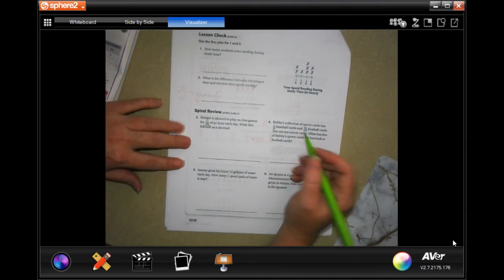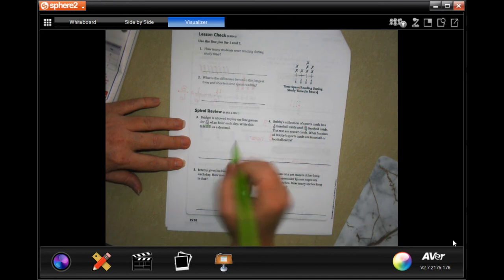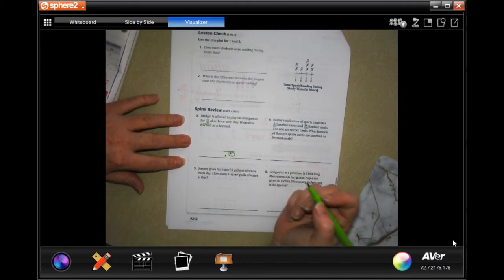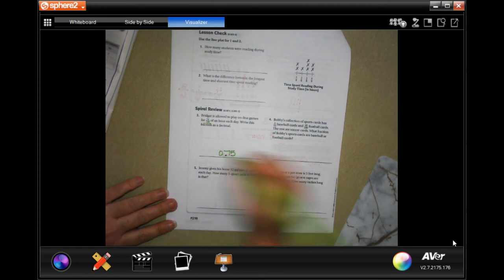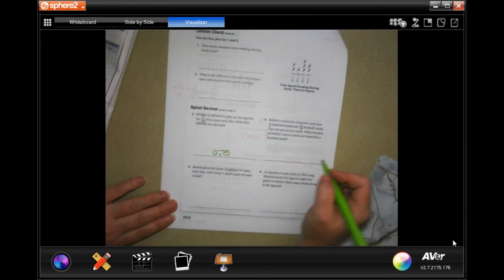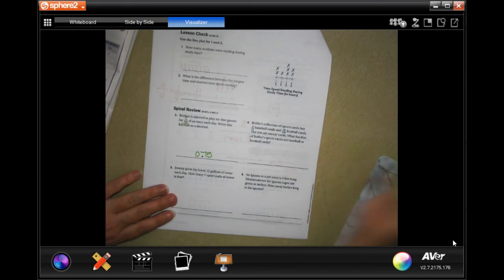Write this fraction as a decimal. Well, all that means is that the last number needs to land in the hundredths spot. That would be the tenths and that would be the hundredths, so we're good. 0.75. You can put a zero in front of it if you want, doesn't change anything.